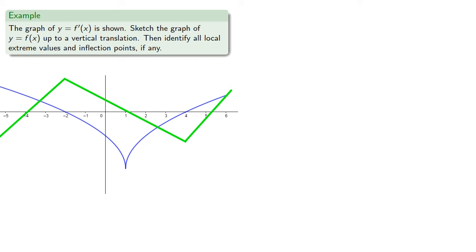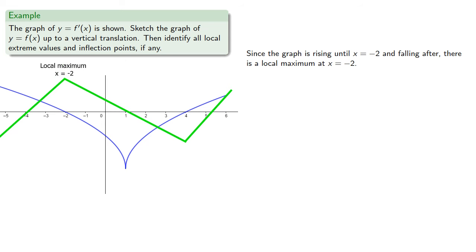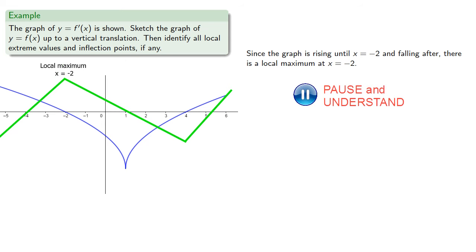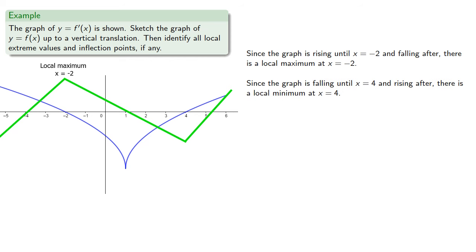This gives us what we can think of as the stick figure version of the graph — the skeleton. Since the graph is rising until x equals negative 2 and falling after, there is a local maximum at x equals negative 2. And since the graph continues to fall until x equals 4 and rises after, there is a local minimum at x equals 4.